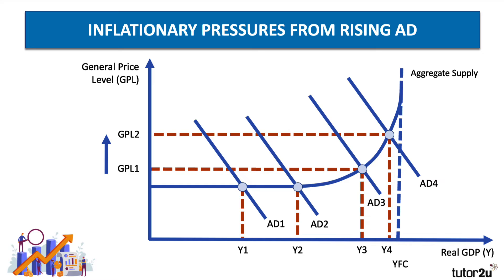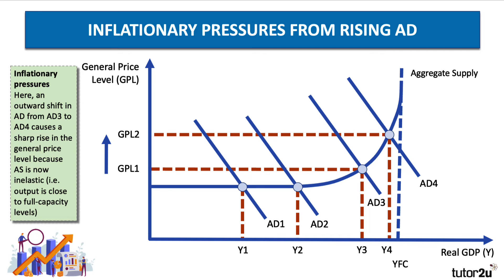However, when the economy is growing more strongly, perhaps reaching the later points of an economic recovery or boom, an increase in aggregate demand from AD3 to AD4 does cause quite significant upward pressure on prices. Yes, output can increase, but the economy is finding it harder to achieve those increases in output. We see a rise in the general price level from GPL1 to GPL2 — demand-pull inflation, with producers feeling willing and able to increase their prices to raise profit margins. Once you get on to the inelastic portion of the Keynesian aggregate supply curve, there is the risk of demand-pull inflation. An outward shift in AD causes a sharp rise in the general price level because aggregate supply is now inelastic, and the output of the economy is getting close to full capacity levels. The vertical section of the Keynesian curve corresponds to the physical limit of the economy — full capacity output YFC.